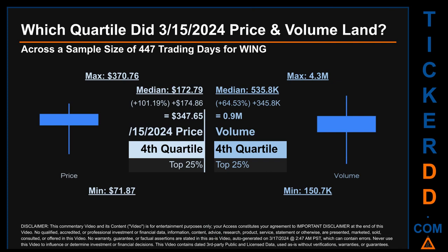Hello, my name is Maria. Which quartile did March 15th, 2024, price and volume land in, across a sample size of 447 trading days? The maximum end-of-day price for WING was $370.76 while the minimum was $171.87. Within that price range, March 15th, 2024's price of $347.65 landed within the fourth quartile, meaning it was within the top 25 percent of all sampled end-of-day prices. The day's volume also landed within the fourth quartile — the top 25 percent of all sampled daily volume — which saw a max of 4.3 million and a minimum of 150,700.